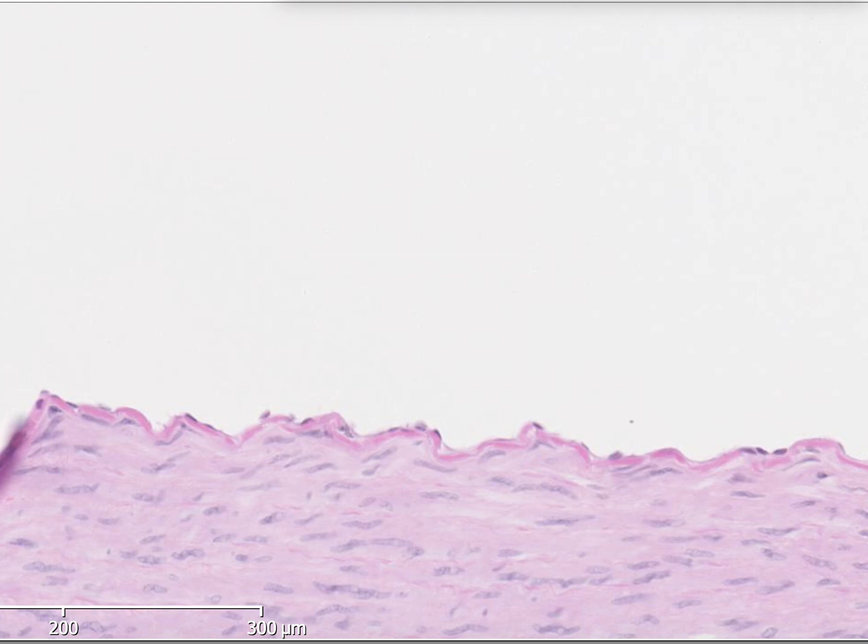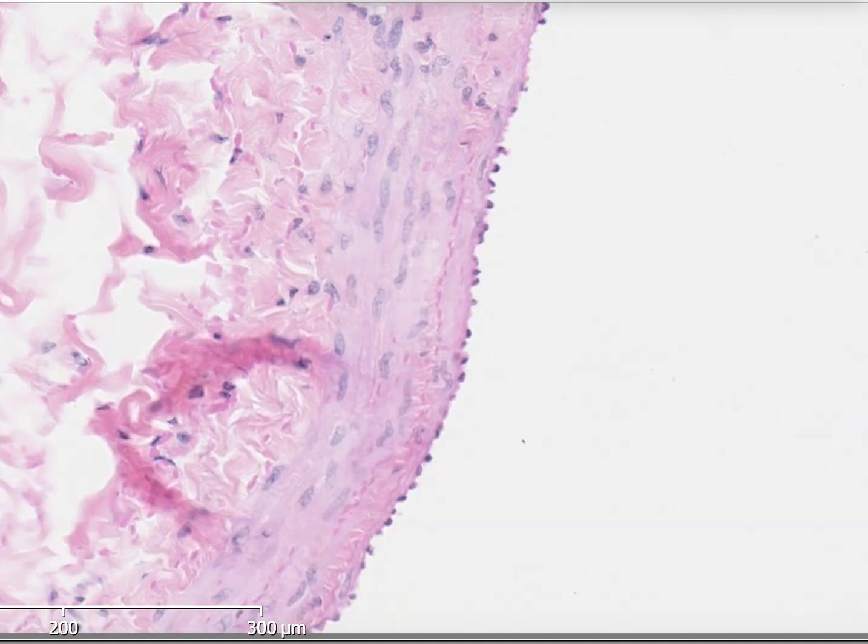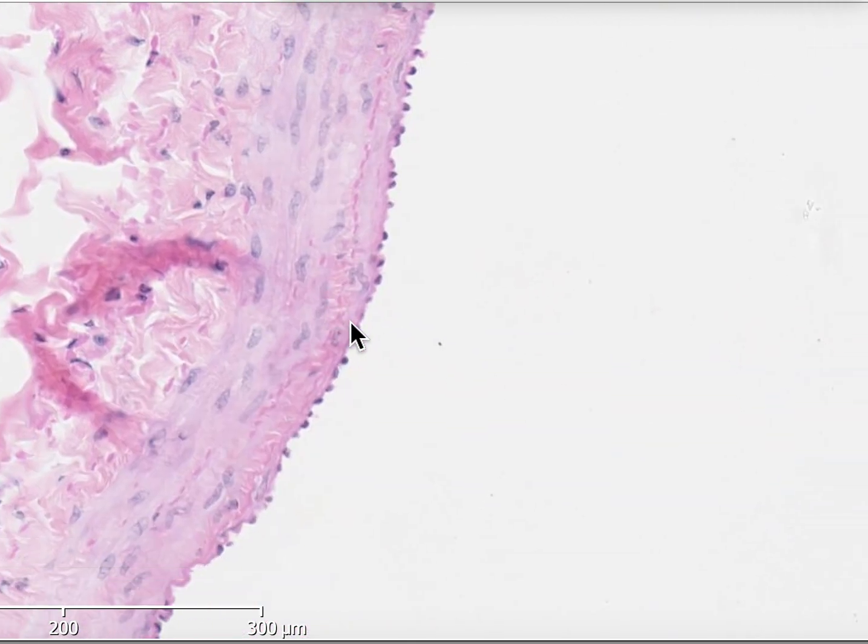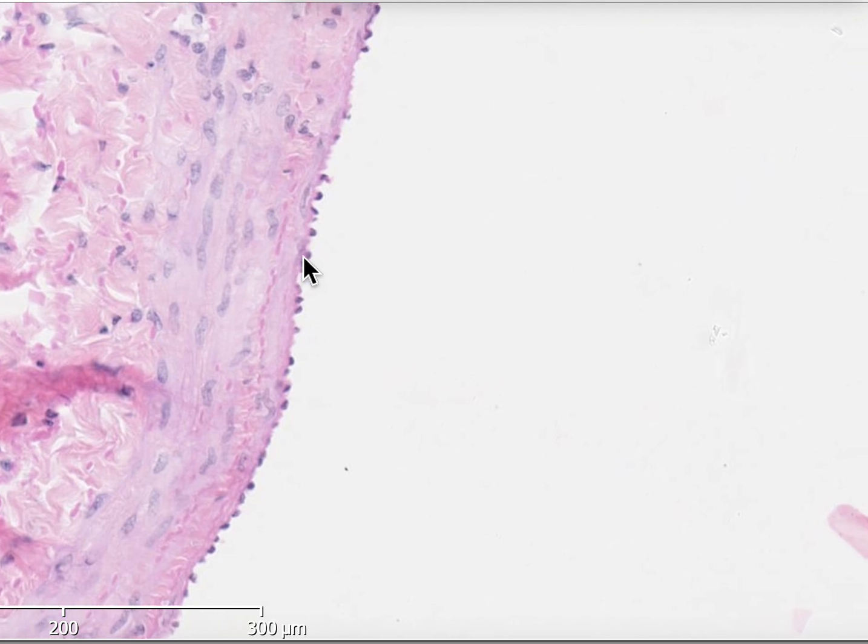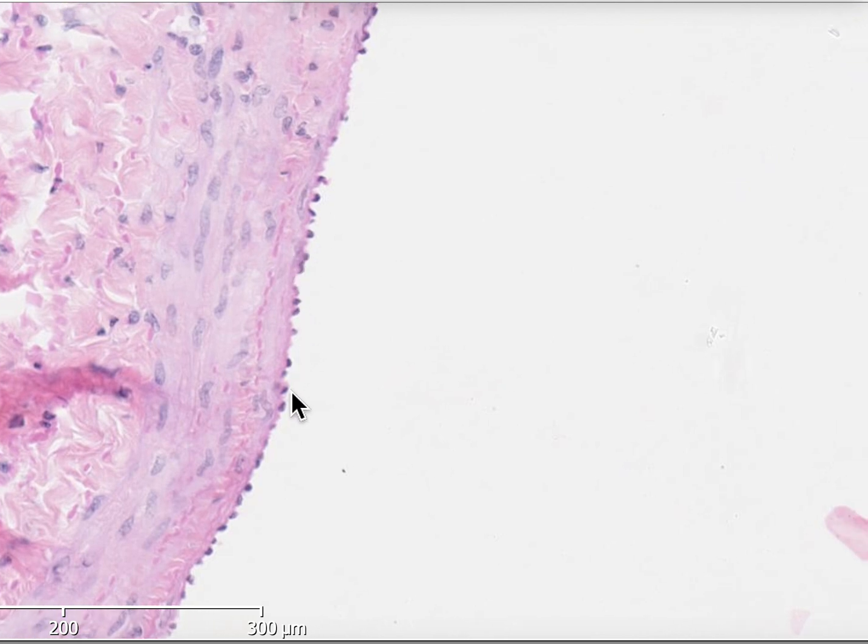If we go to this slide here, or to this portion here, we can see this lining again - just oval-shaped cells without clear cytoplasm. All of these cells are simple squamous epithelium.